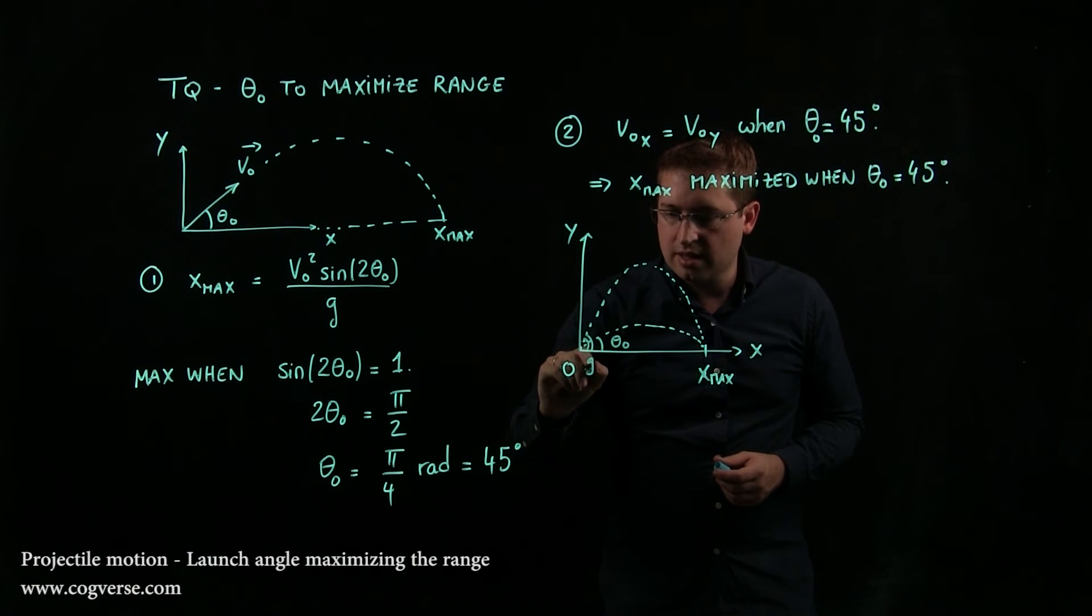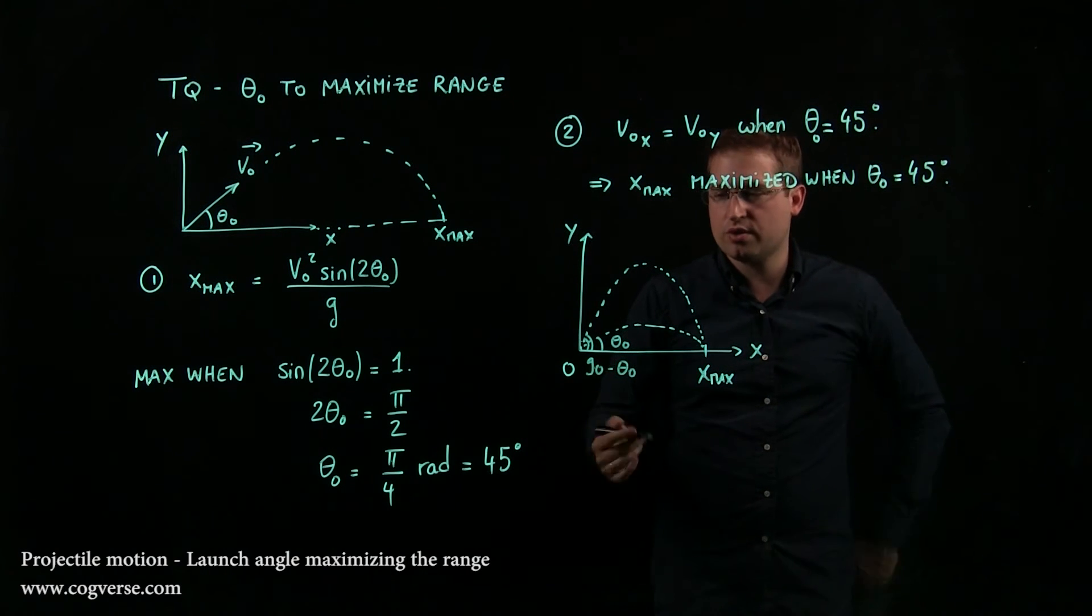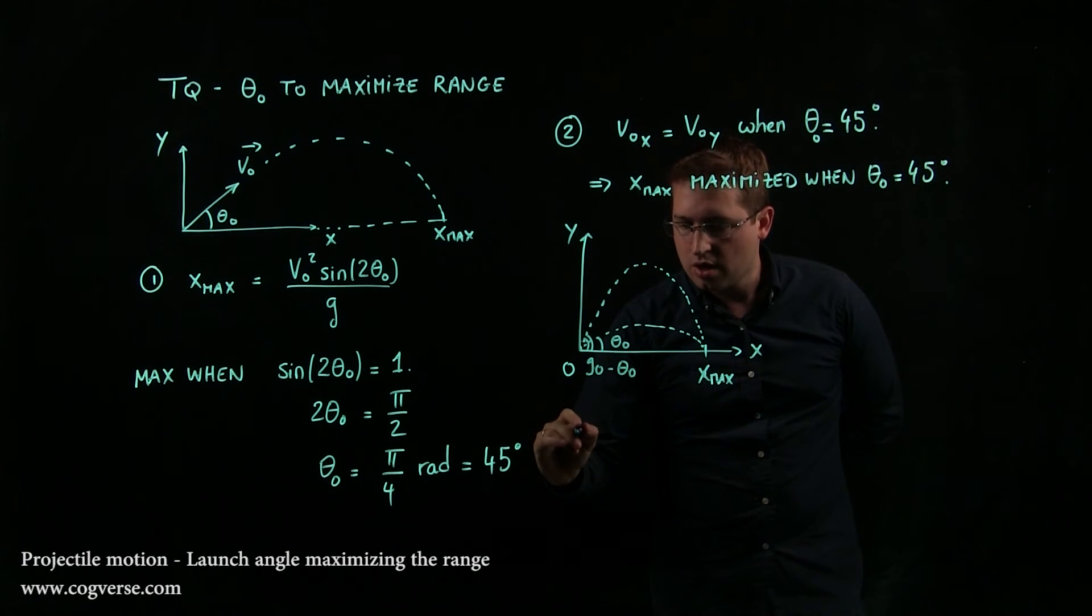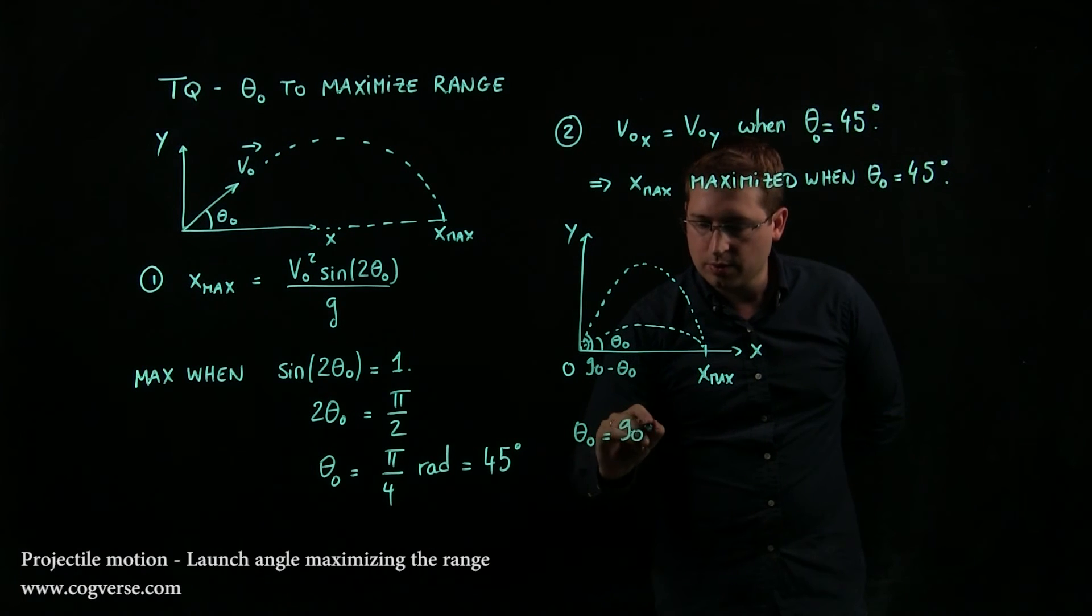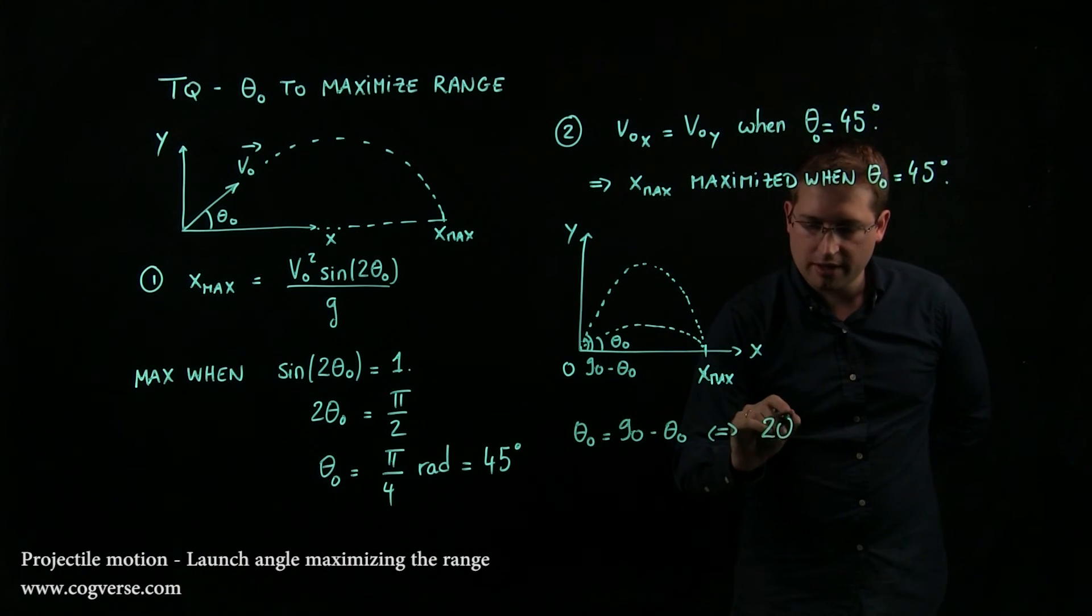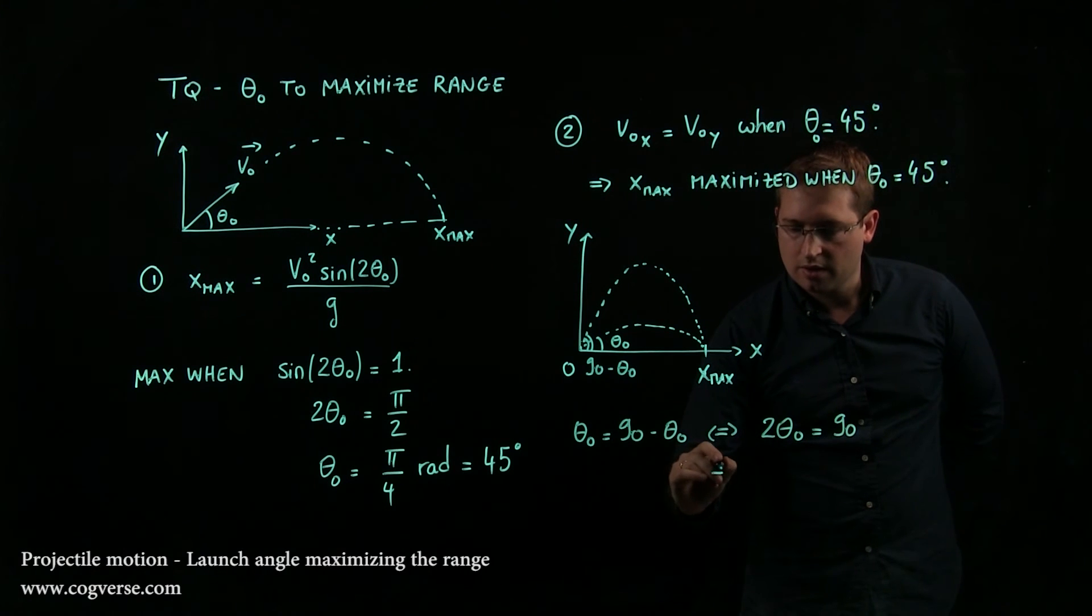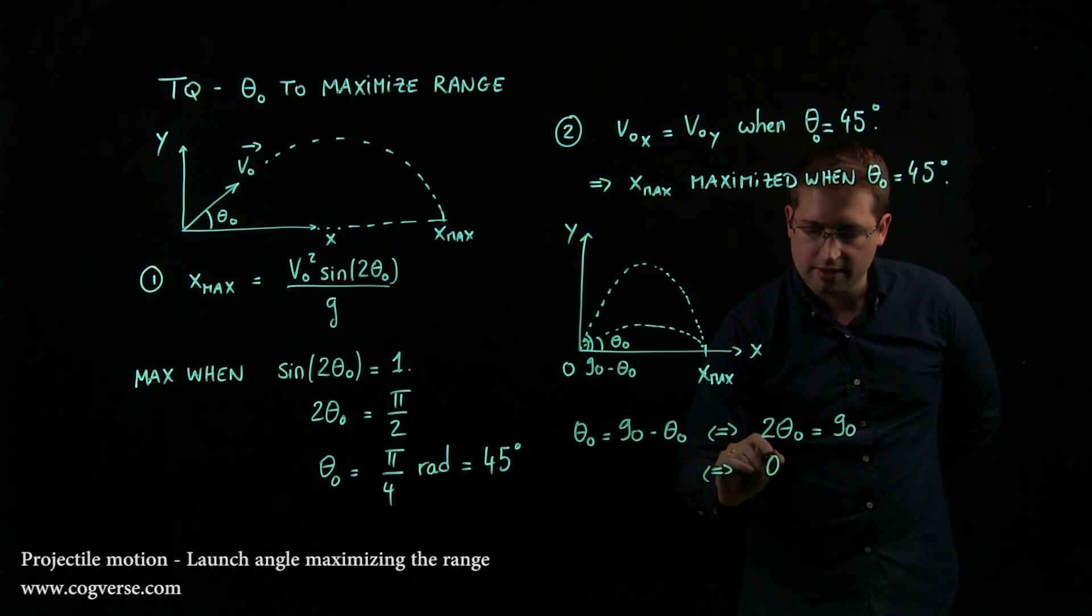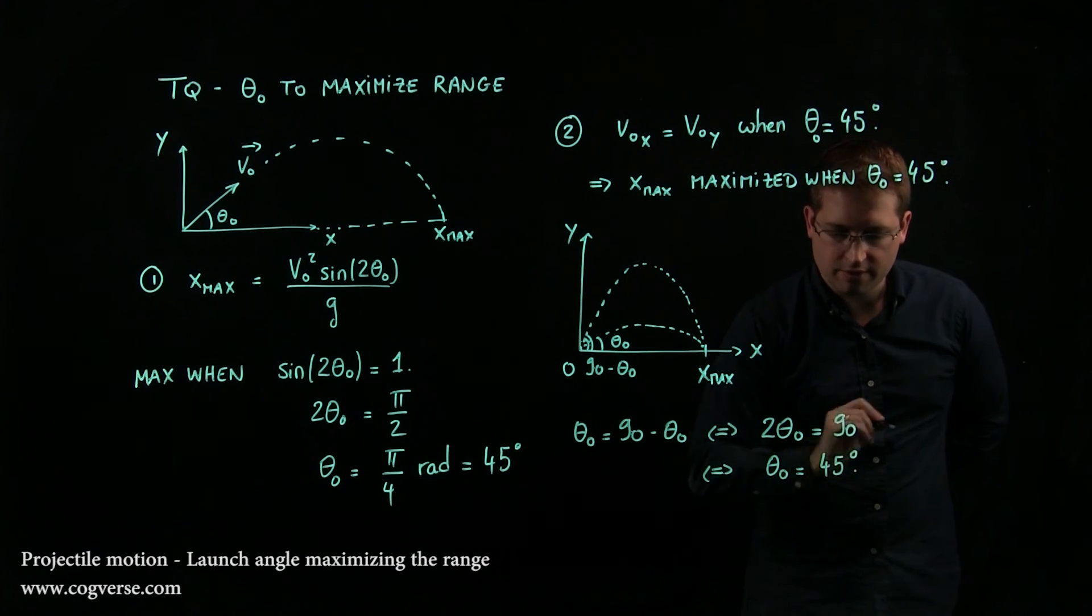And we said that this launch angle is θ₀ and that the other launch angle is 90 minus θ₀. So they'll superpose and you'll have maximum range when θ₀ is equal to 90 minus θ₀. And that's the same as saying that 2θ₀ is equal to 90, which is the same as saying that θ₀ has to be 45 degrees.